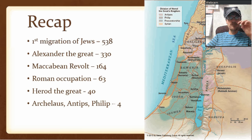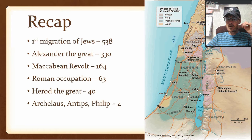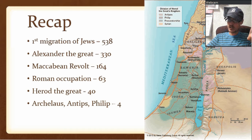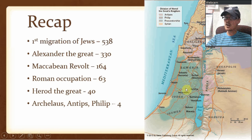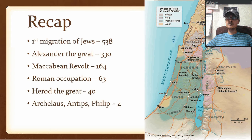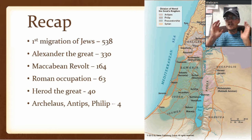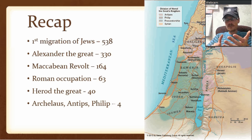By 4 or 6 AD, Archelaus is exiled for incompetence. So this area where Archelaus was is now under what's called a procuratorship — which, way oversimplifying here, means Roman governors.